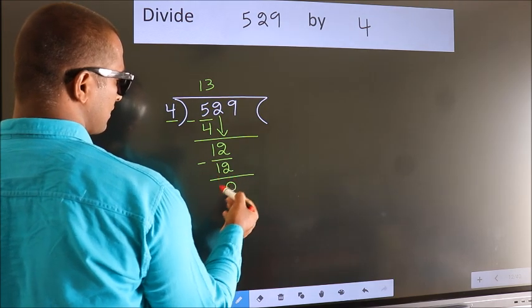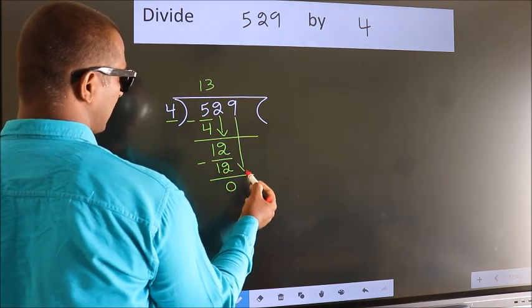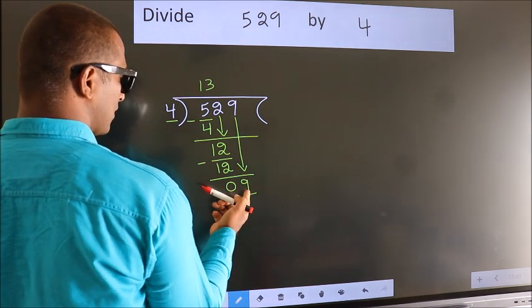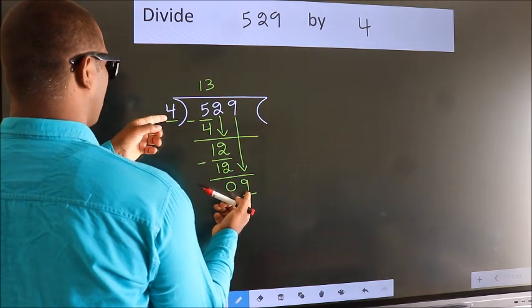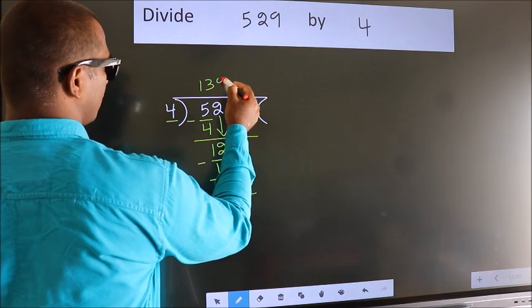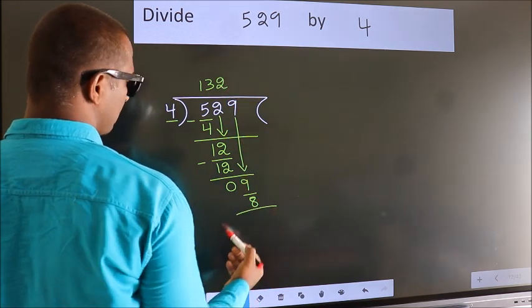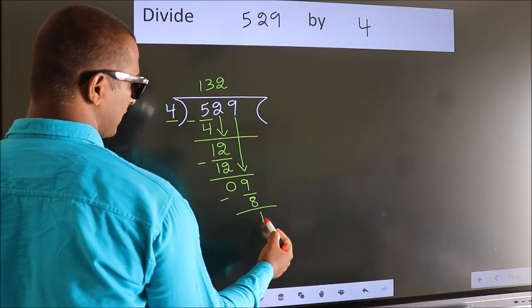After this, bring down the beside number. So, 9 down. So, 9. A number close to 9 in 4 table is 4 twos, 8. Now we subtract. We get 1.